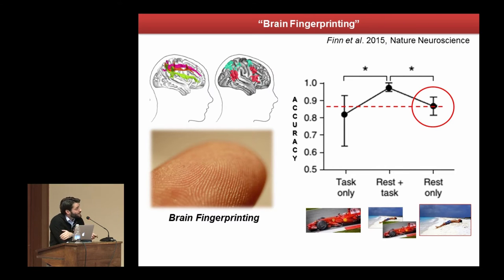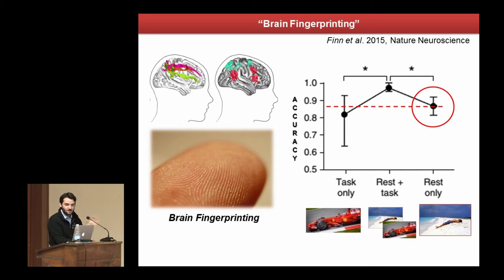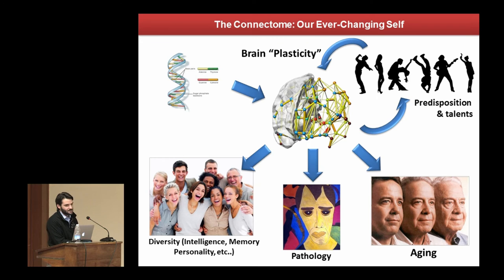If you look at the accuracy level, it's actually easier to discriminate subjects when you look at resting state activity than when you look at task activity. Which is the opposite of what you would think — if I want to see how I'm different from other people because I can do things differently, no, probably I should look at your brain while you're not doing anything. That's the reason why we look at brain connectivity — it's a good source of information to study intelligence.